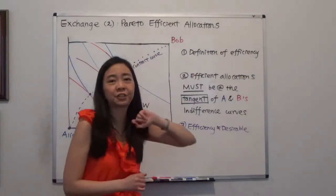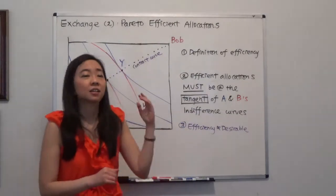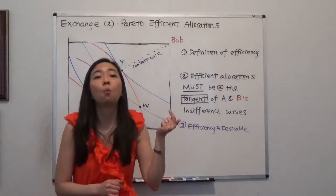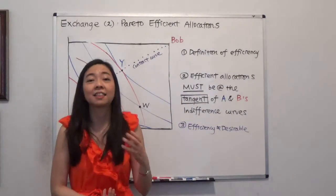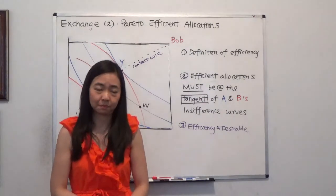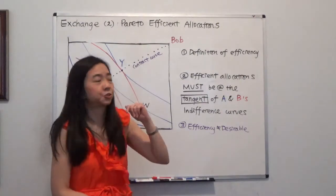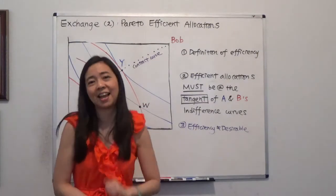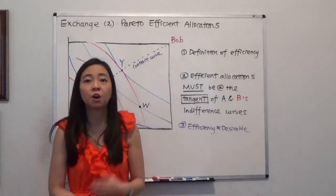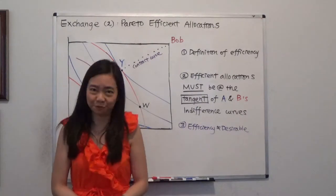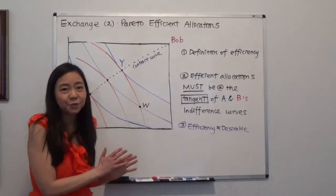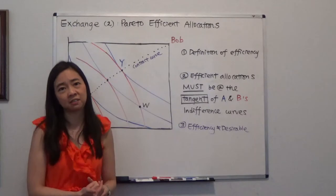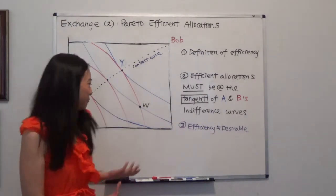So the definition of efficiency is this. You will not be able to improve Alice's utility without hurting Bob's utility. Then we know the outcome is efficient. And vice versa. So say we cannot improve Bob's utility without hurting Alice's utility. Then you know the allocation of good one and good two is efficient. So that means if you can improve one person's utility without hurting the other person's utility, then you know the outcome is still inefficient.